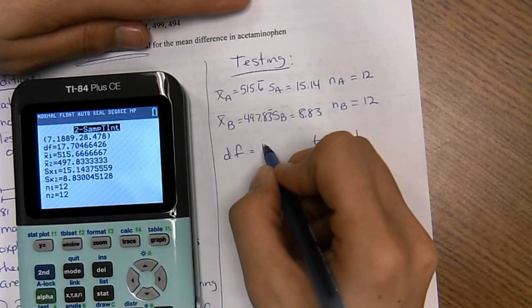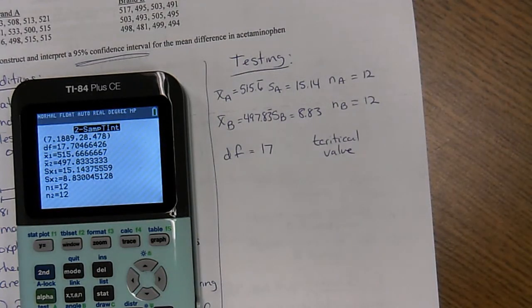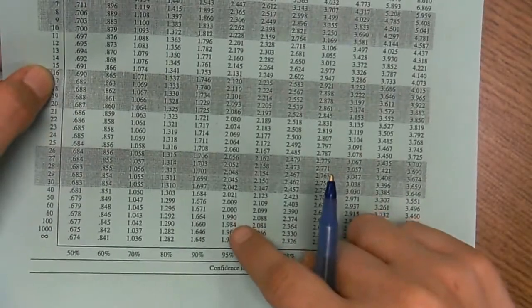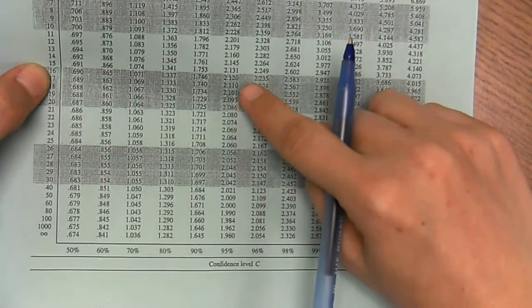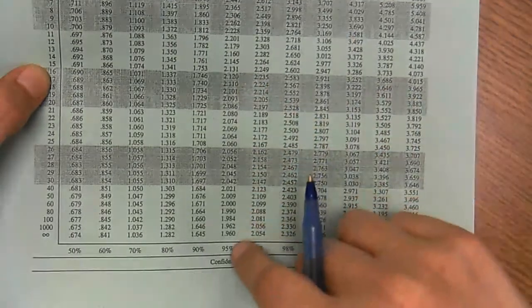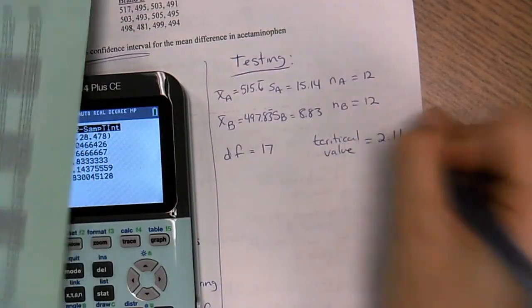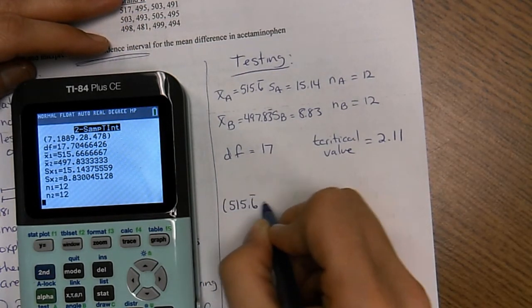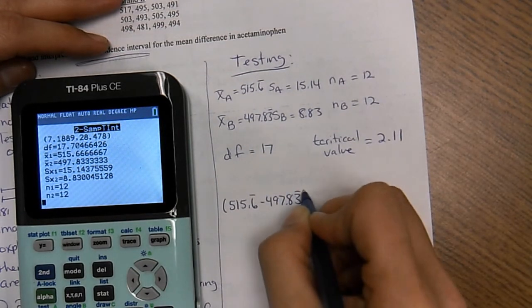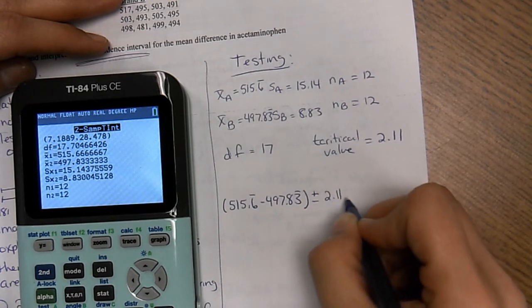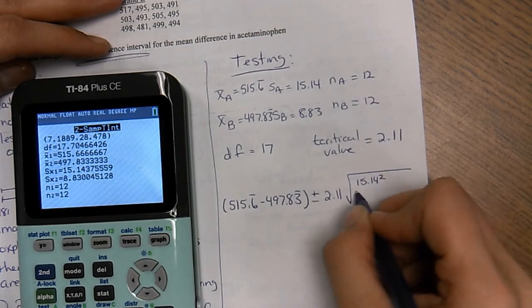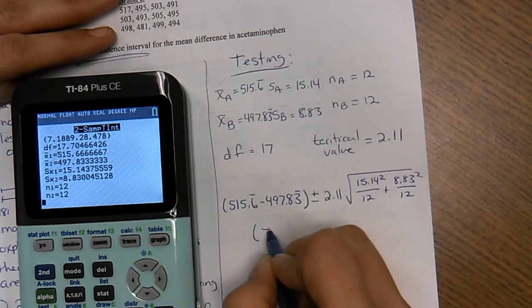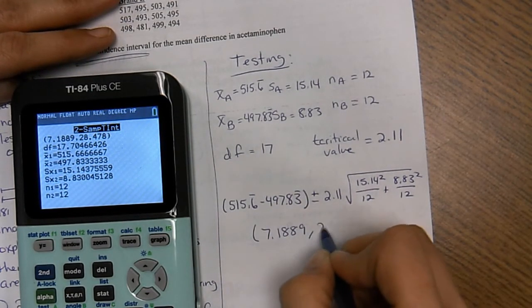Degrees of freedom, I'm going to round down to 17. Then my t critical value is 2.11. So, 515.6 repeating minus 497.83 repeating plus or minus 2.11 times 15.14 squared over 12, 8.83 squared over 12. And then the interval is 7.1889 to 28.478.